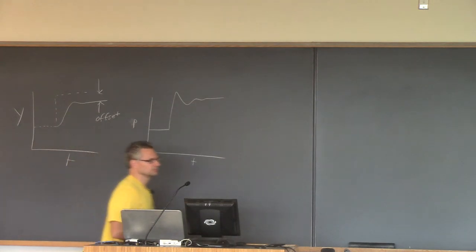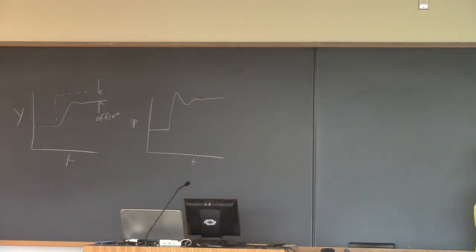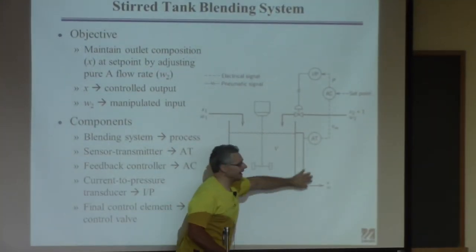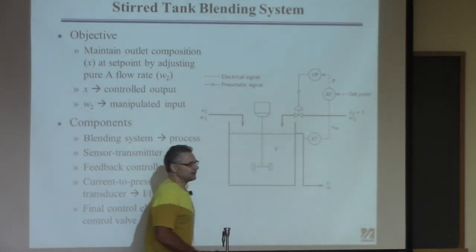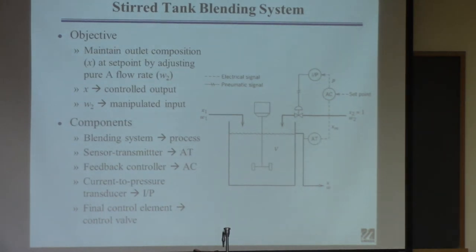Student question: what's the difference between GC and G for transfer functions? GC is the transfer function of the controller. G is the transfer function of the process. G is the transfer function of the tank, for example. GC represents what the controller algorithm does. The first third of the course involved deriving process transfer functions G. Now we're introducing a new transfer function — the controller's — which is called GC.